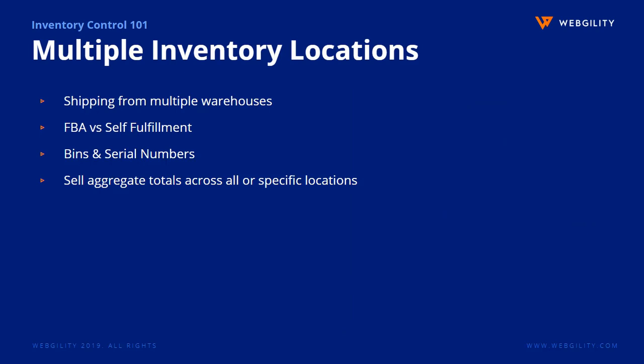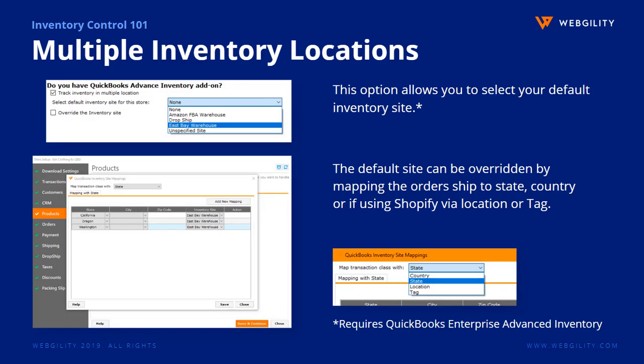Selling with multiple inventory locations adds further complication to e-commerce sales, but using Webgility Desktop makes selling and shipping from multiple locations easier. Webgility Desktop allows you to set both a default and override locations. This does require QuickBooks Enterprise with advanced inventory, but it automates having a product fulfilled from different locations based on state, country, or if using Shopify, an order tag.